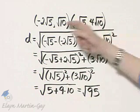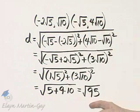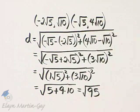So the distance between these two ordered pairs on the coordinate plane is exactly the square root of 95 units.